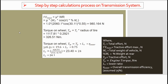Torque on the wheel equals total tractive force times the radius of the tire. Using the total tractive force calculated previously and the tire radius in meters, we have got 326.51 Newton-meters of torque on the wheel.